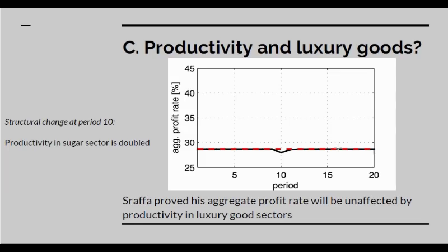Instead, let's reduce the organic composition of capital in the luxury goods sector by reducing steel usage. Kliman is able to show for one short time step that you get a rise in the rate of profit, but that's a temporary blip — the thing soon tracks back onto the Sraffian tendency. We don't know what he assumes his time periods to be; at some points he clearly assumes a month, at other points perhaps a year. But it's a very short-term effect, his deviation from the long-term Sraffian trend. Consequently, Kliman's profit rate can never systematically change due to changes in the luxury goods industry.